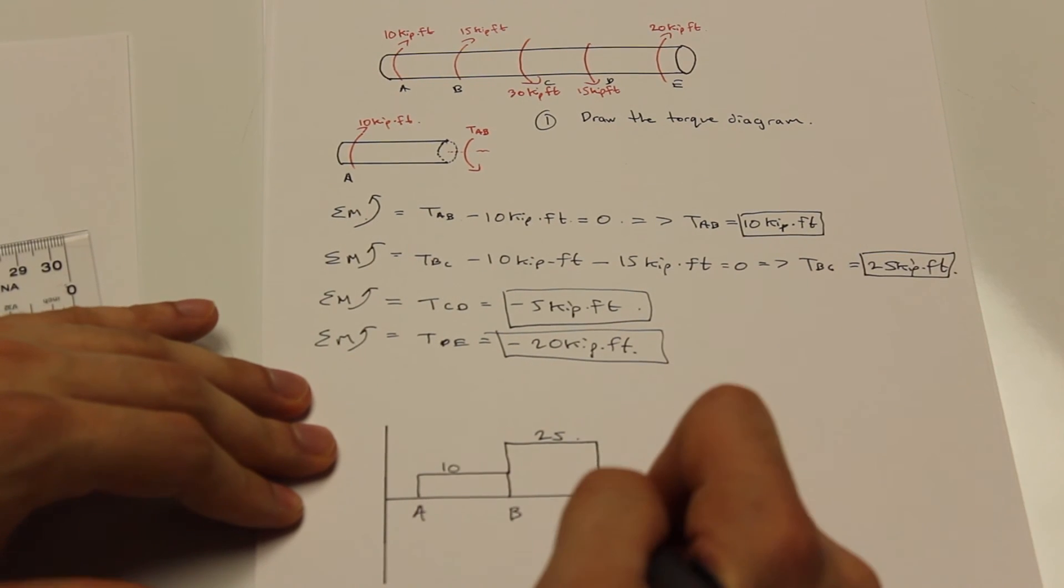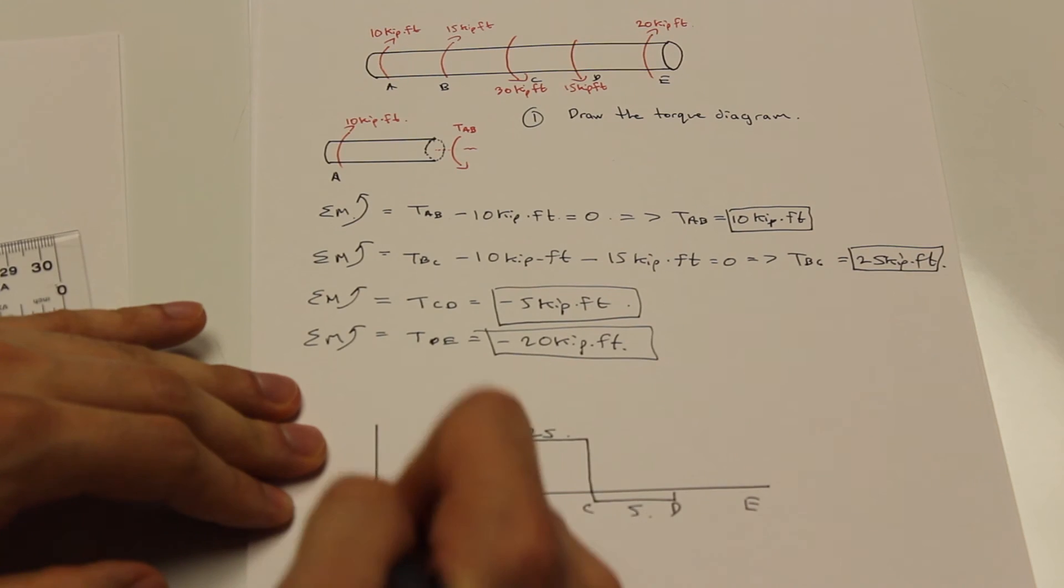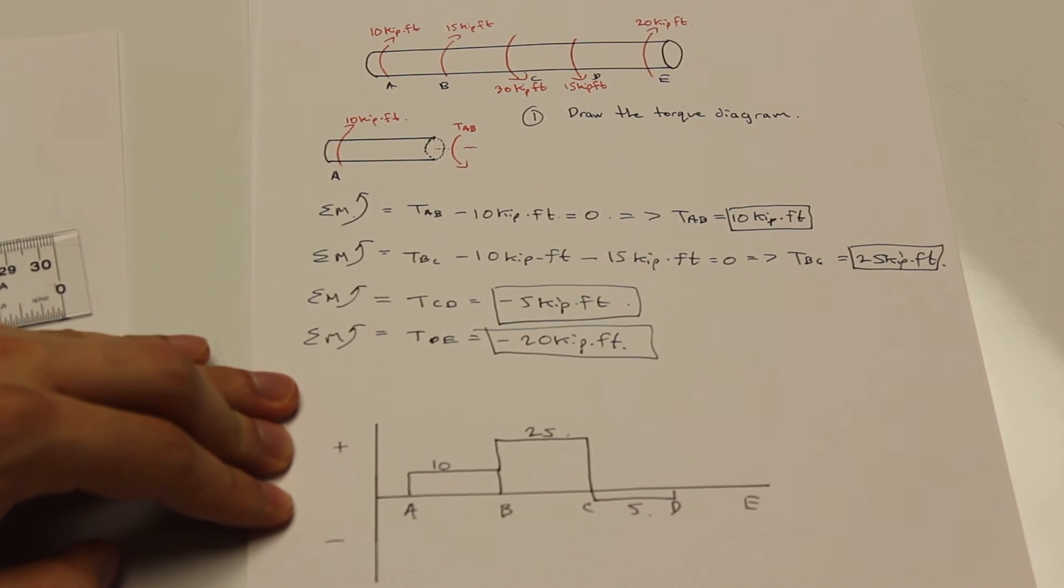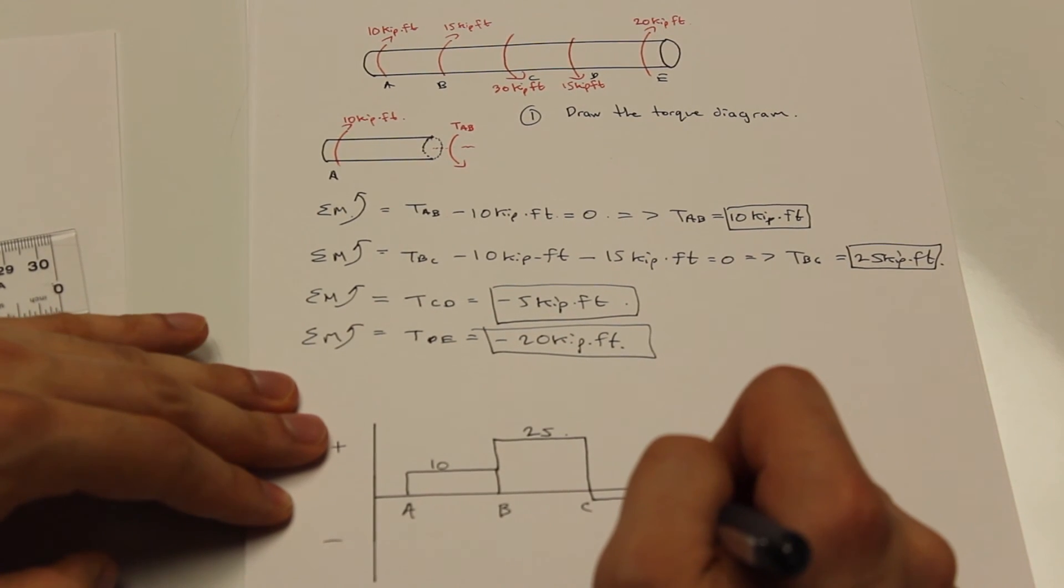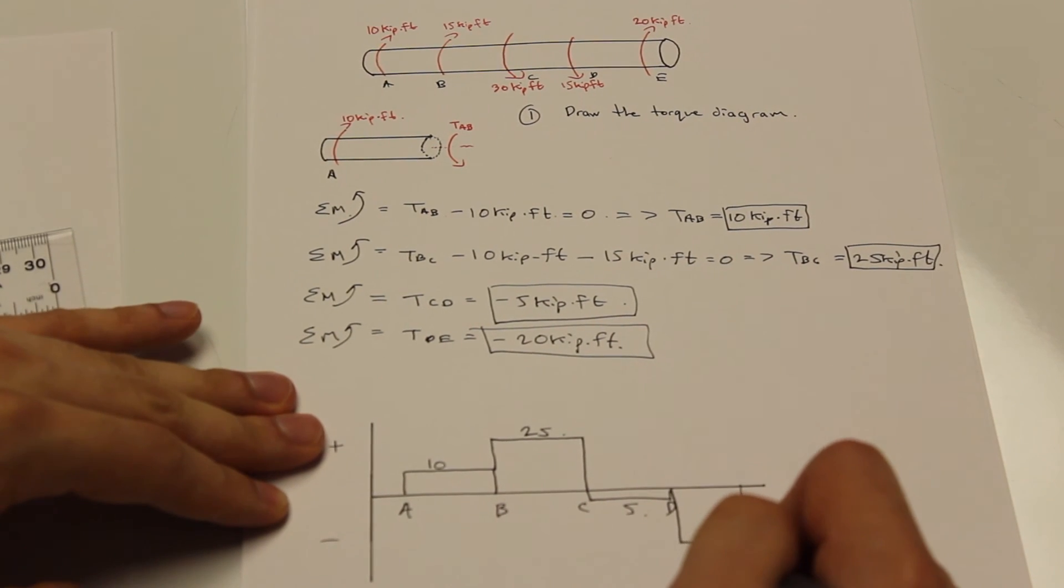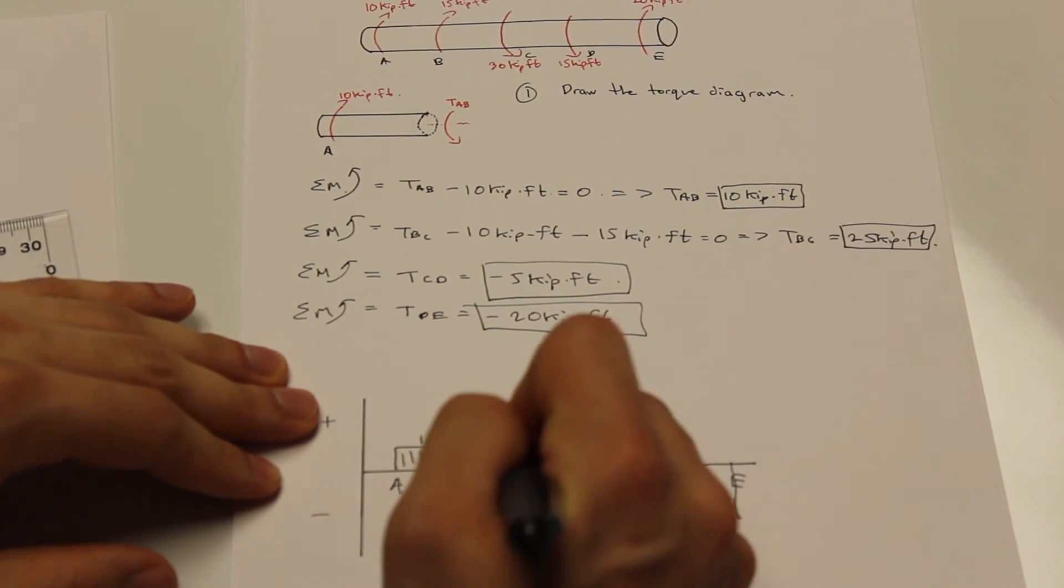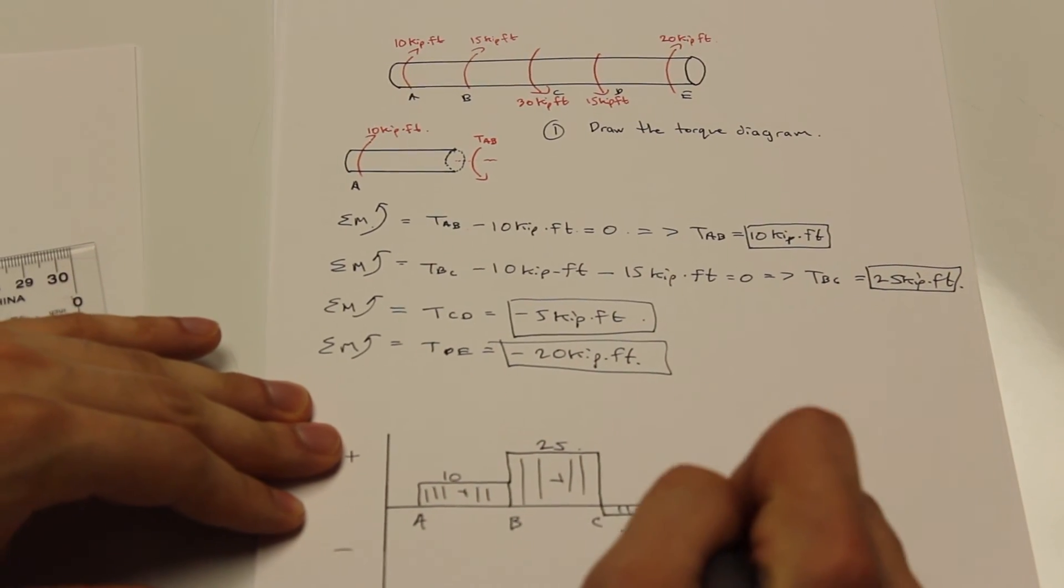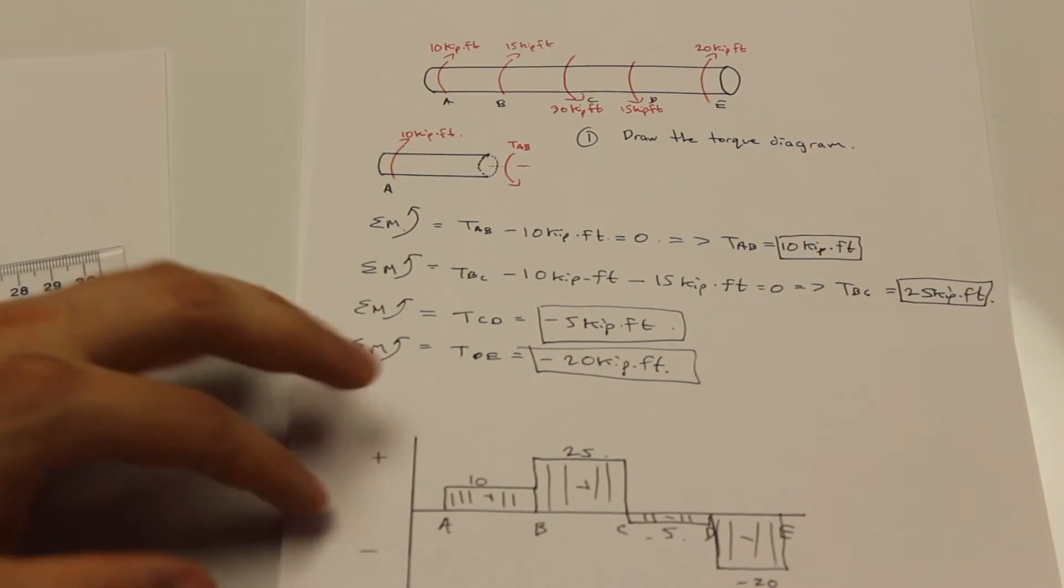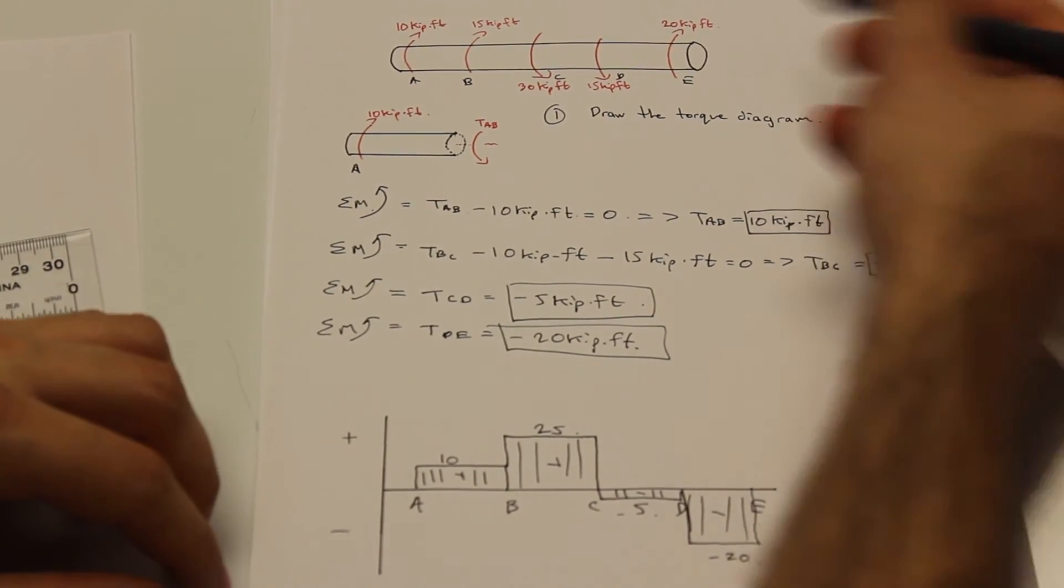CD negative 5. Let's just do that so we're not confused. And we have 20, negative 20. And that's it guys. That's our torque diagram for this problem.